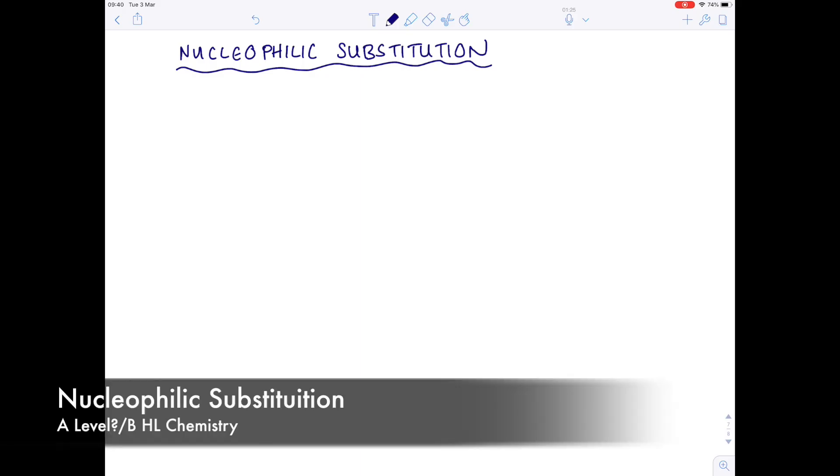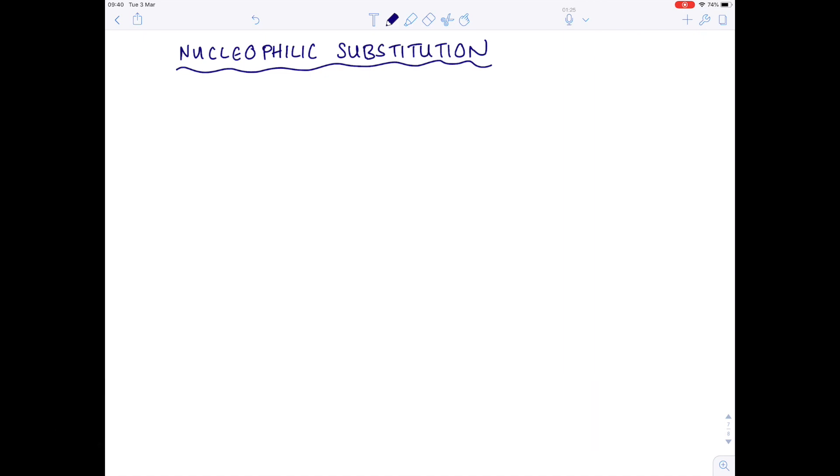In this A-level, IB, high-level chemistry video, we're going to be talking about nucleophilic substitution. I'll be talking you through what the term nucleophilic substitution actually means, and I'll be showing you various mechanisms, specifically ones involving haloalkanes reacting with hydroxide, cyanide, as well as ammonia. So that's what's coming up in today's video.